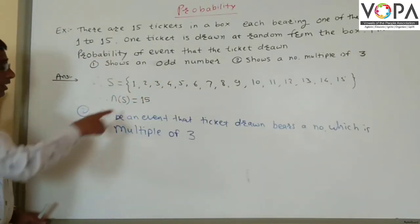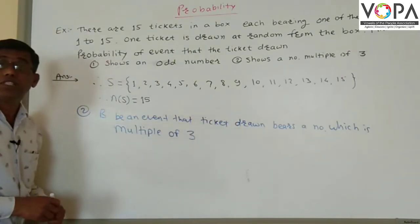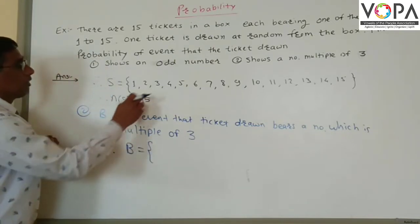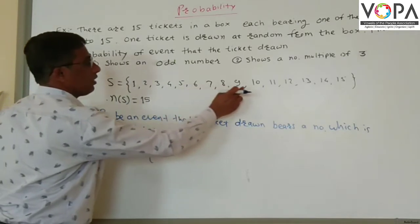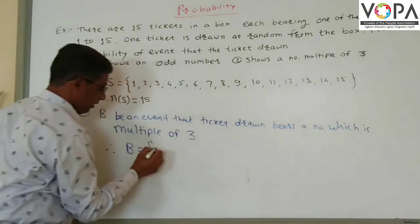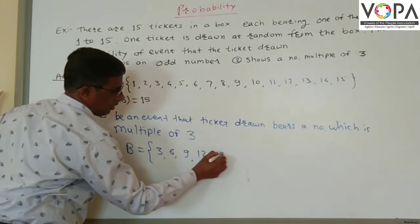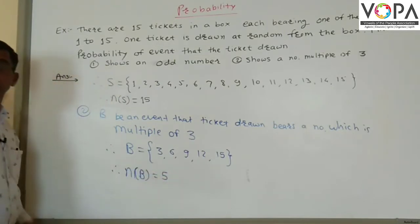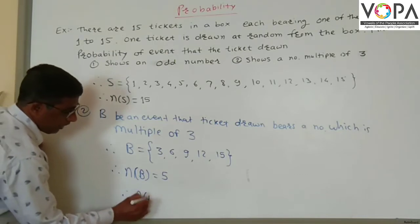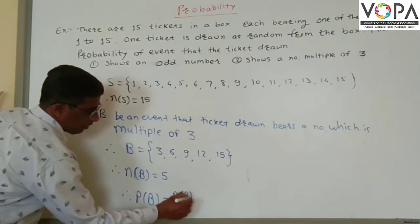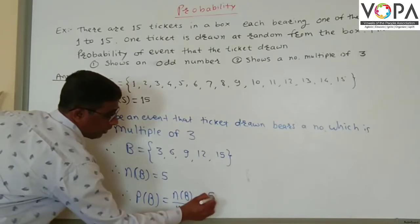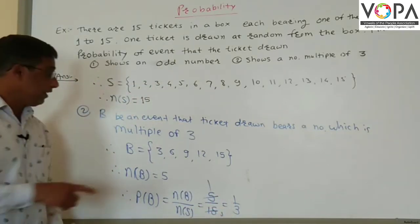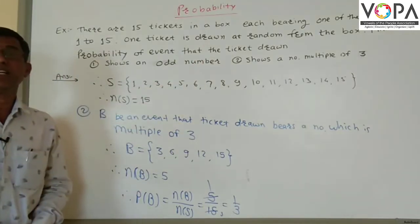Now, second, let B be an event that the ticket drawn bears a number which is a multiple of 3. Therefore, B is equal to {3, 6, 9, 12, 15}. Now, the ticket drawn bears a multiple of 3. Therefore, N of B is equal to 5. Therefore, probability of B means N of B upon N of S, means 5 upon 15. This is one third — 5 ones are 5, 5 threes are 15. So, one third is the probability of the second question.